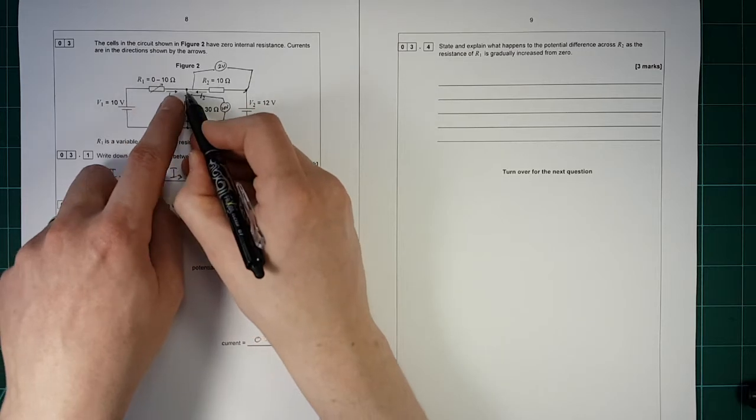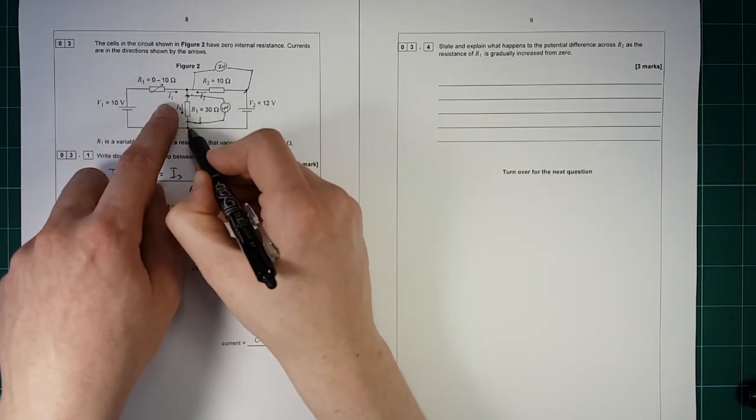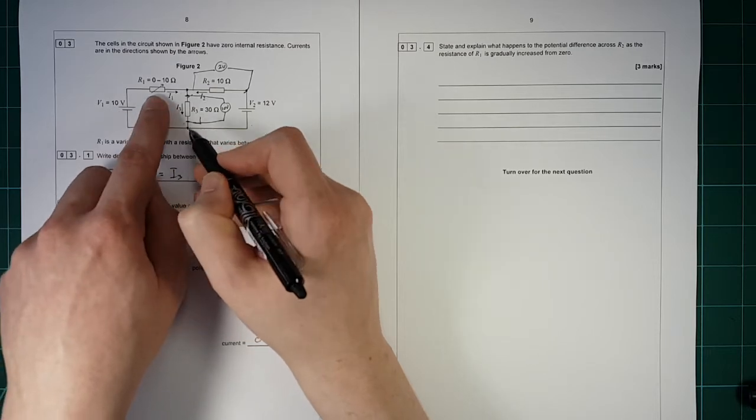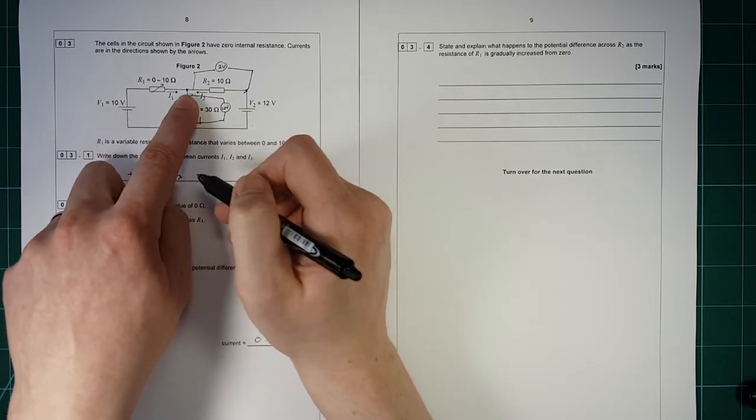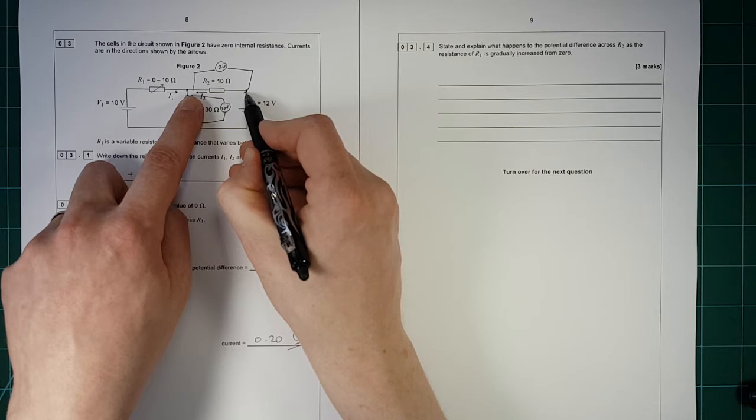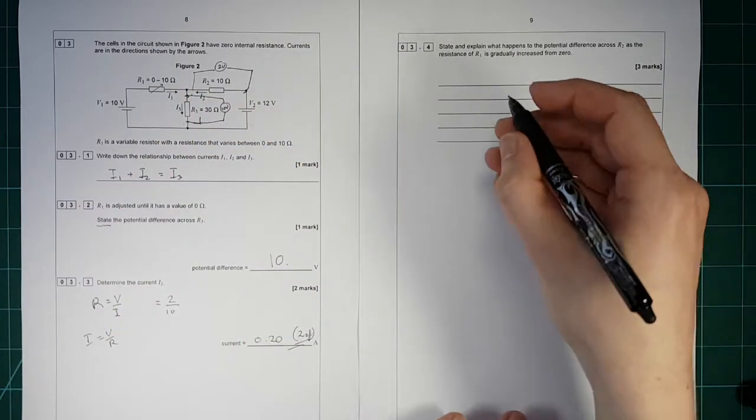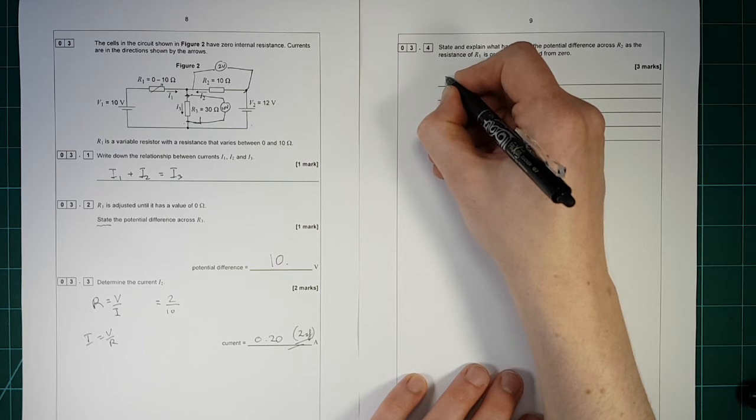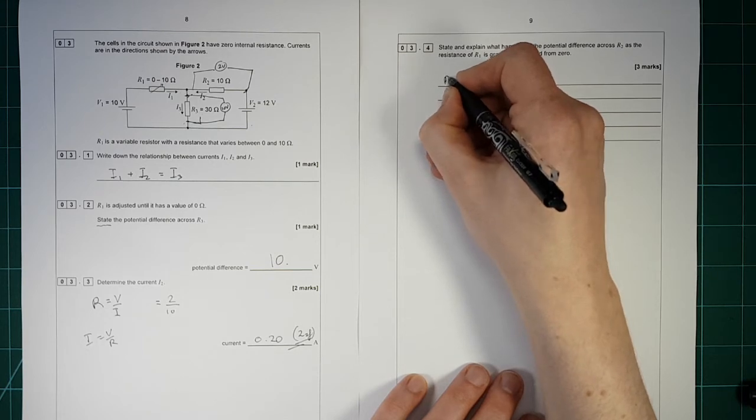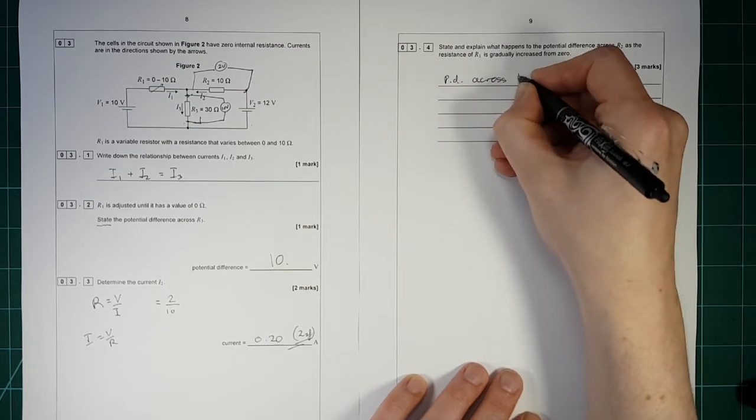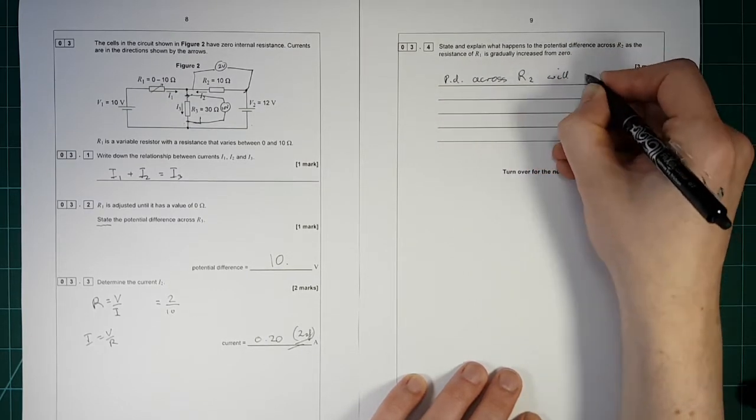So if there's smaller potential across here, because some of the 10 is across here instead, then this point here will drop, which means that there's got to be a greater potential across there. So it's going to increase. So the PD across R2 will increase.